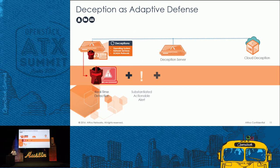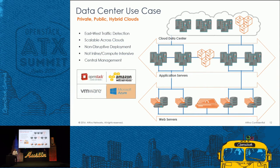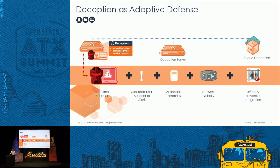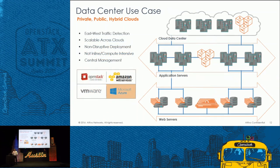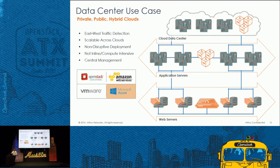So now not only do you have real-time detection, you have actionable alerts because nobody is supposed to talk to us — there are no real services, nothing valid running. If somebody touches one of our IPs, they're guilty. We give you the needle, the forensics, the visibility. We deploy on multiple platforms: we're available as VMware, OpenStack, AWS, as well as an appliance. And Microsoft Azure is coming next.